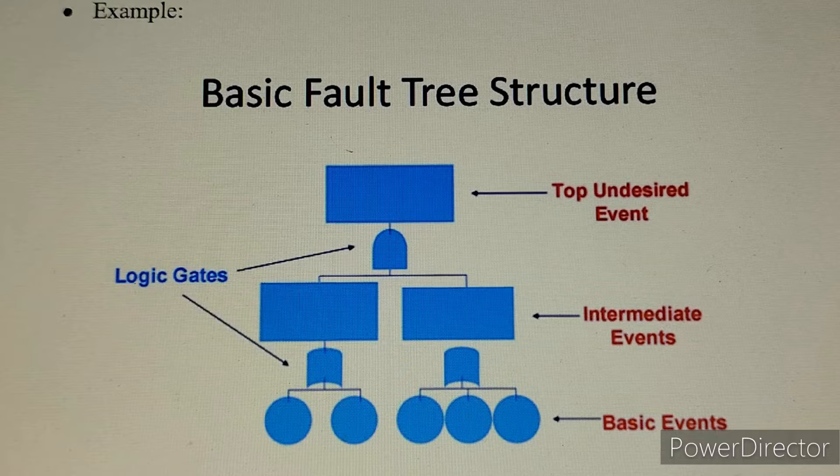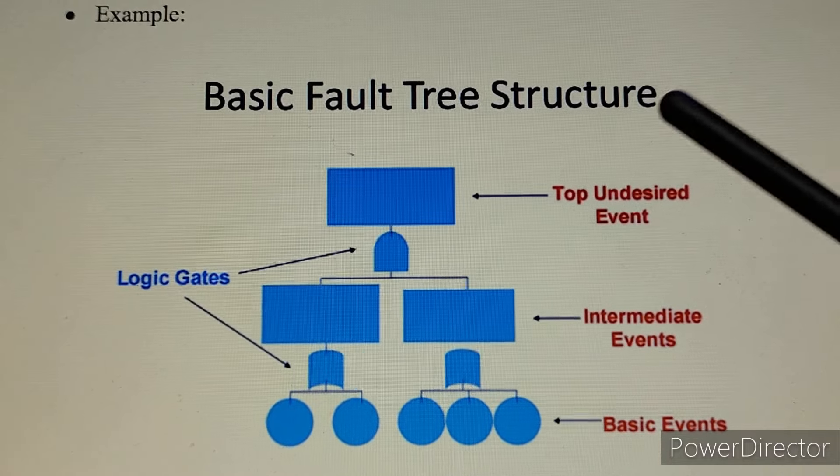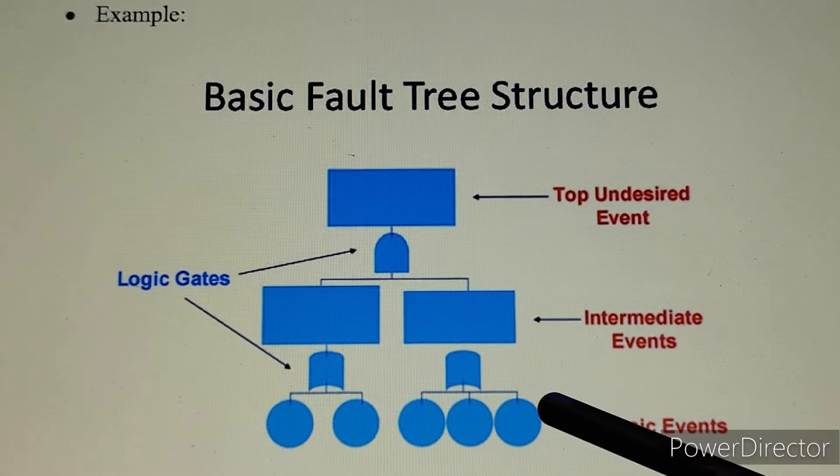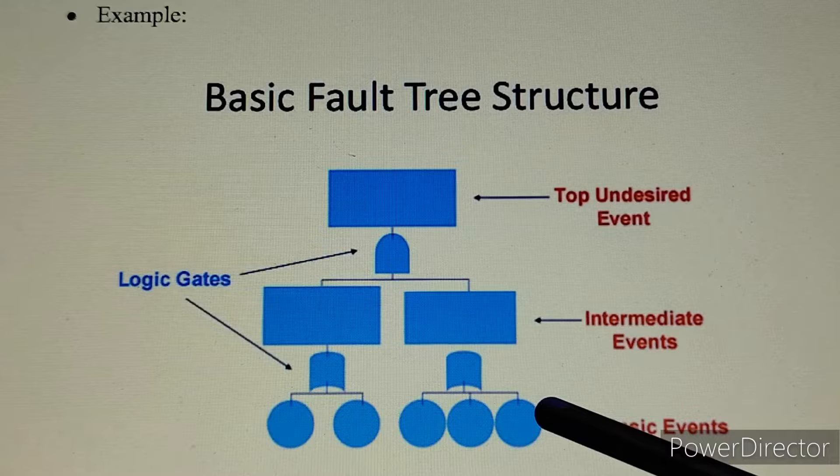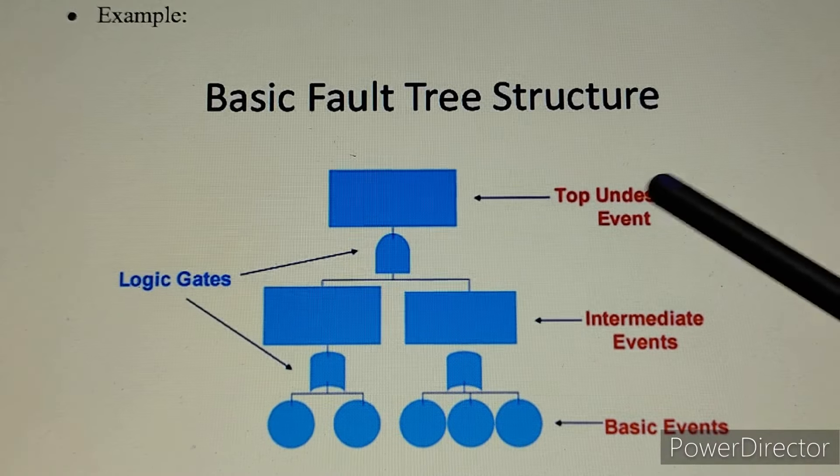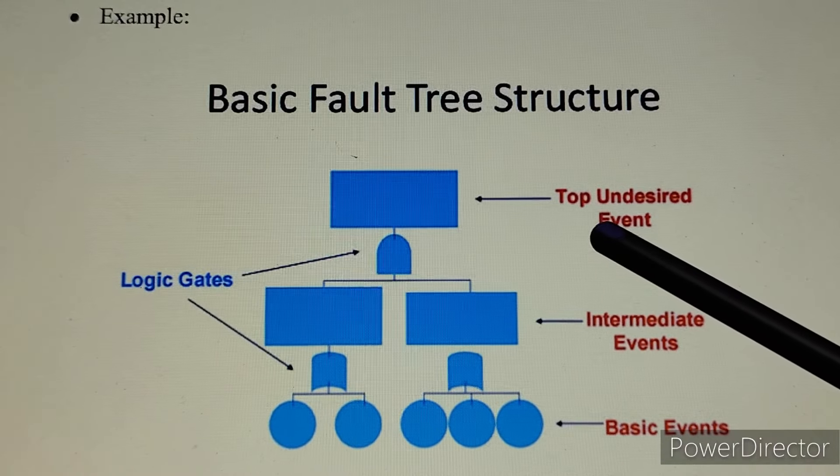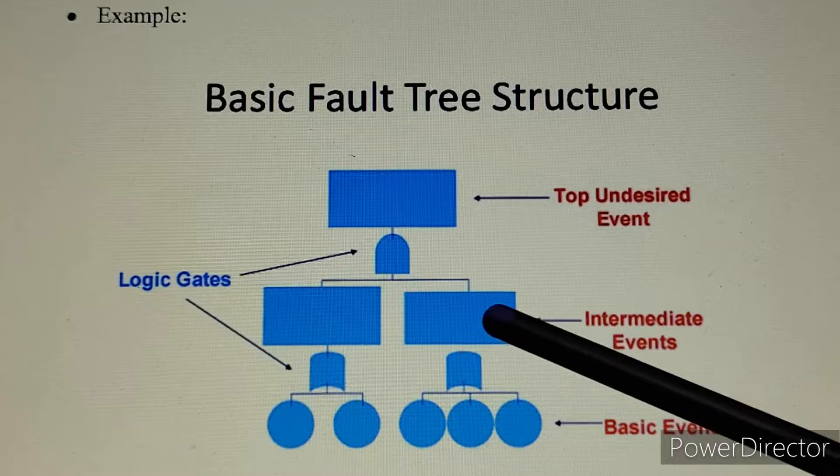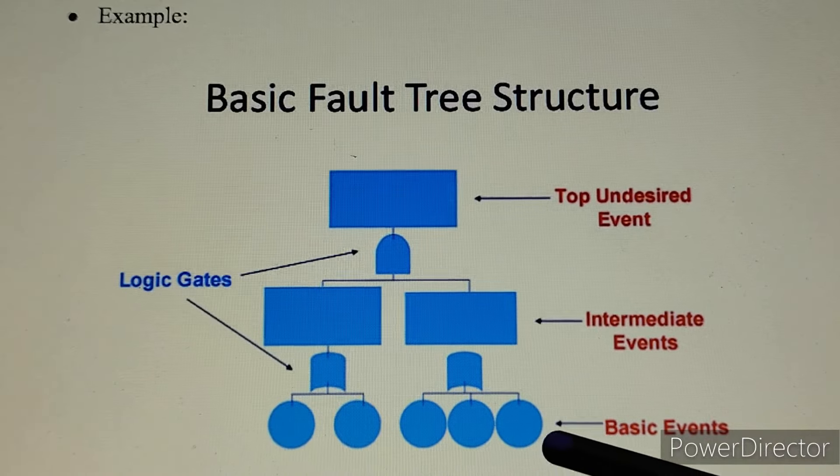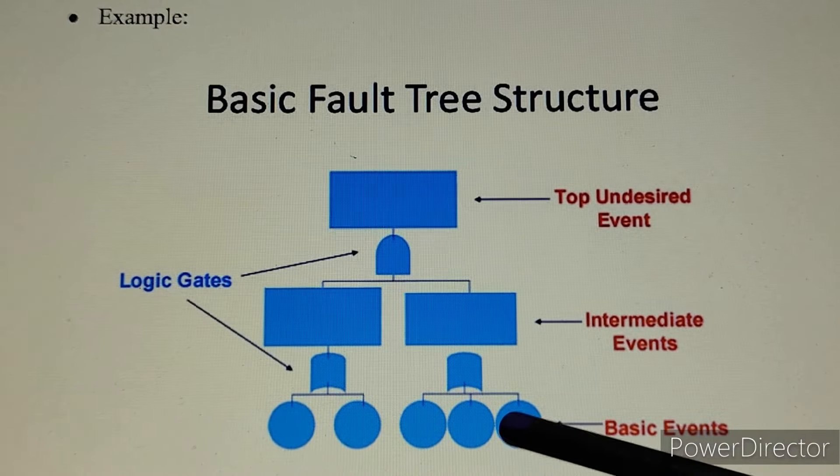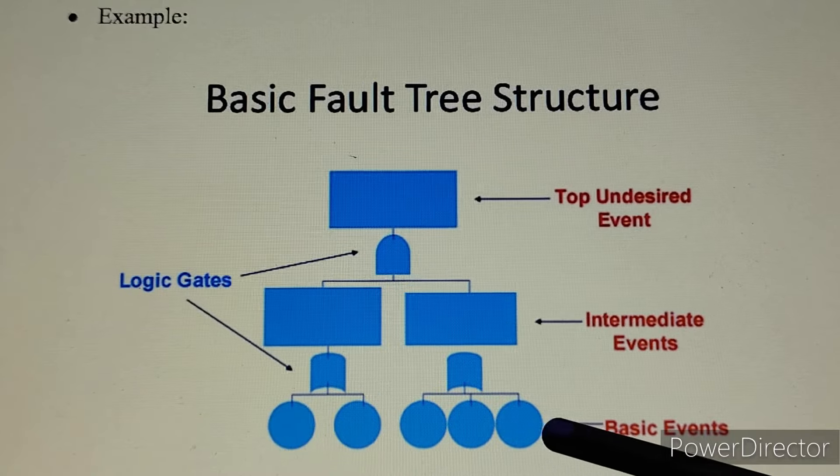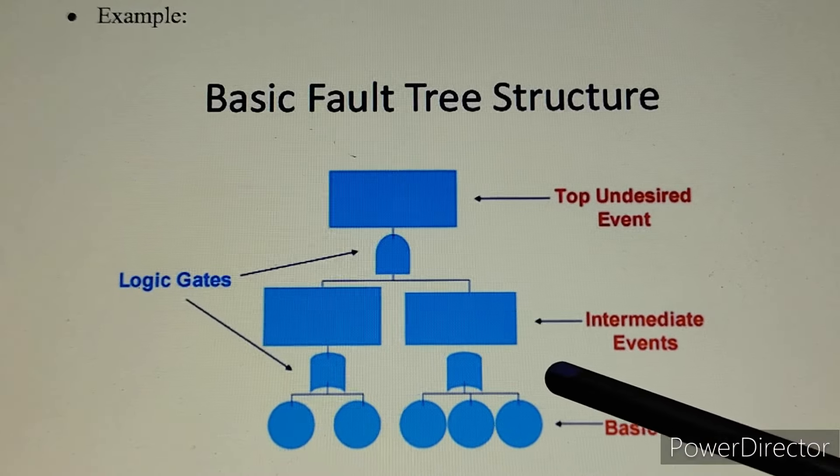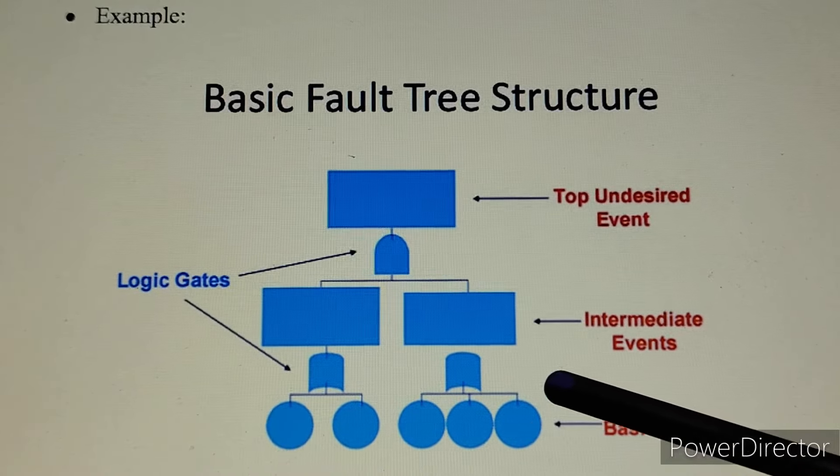Now we will understand through an example. This is only the basic tree structure of FTA: top undesired event, then intermediate events, and last we have basic events, which we cannot further classify or we cannot find other causes. Here we have to stop.